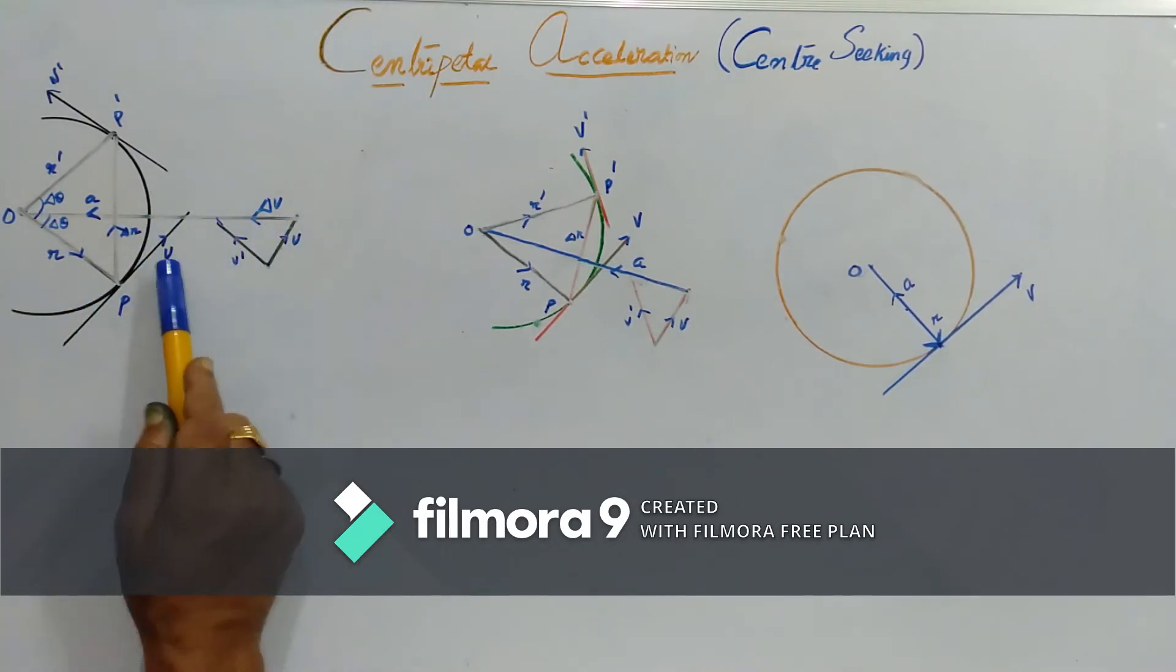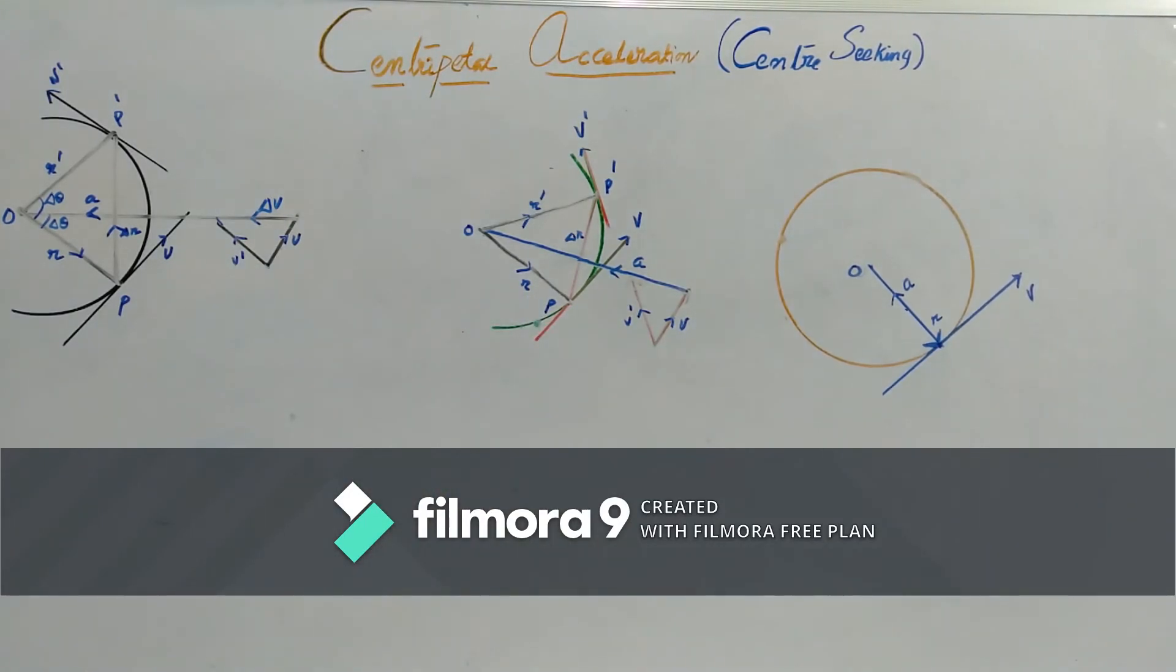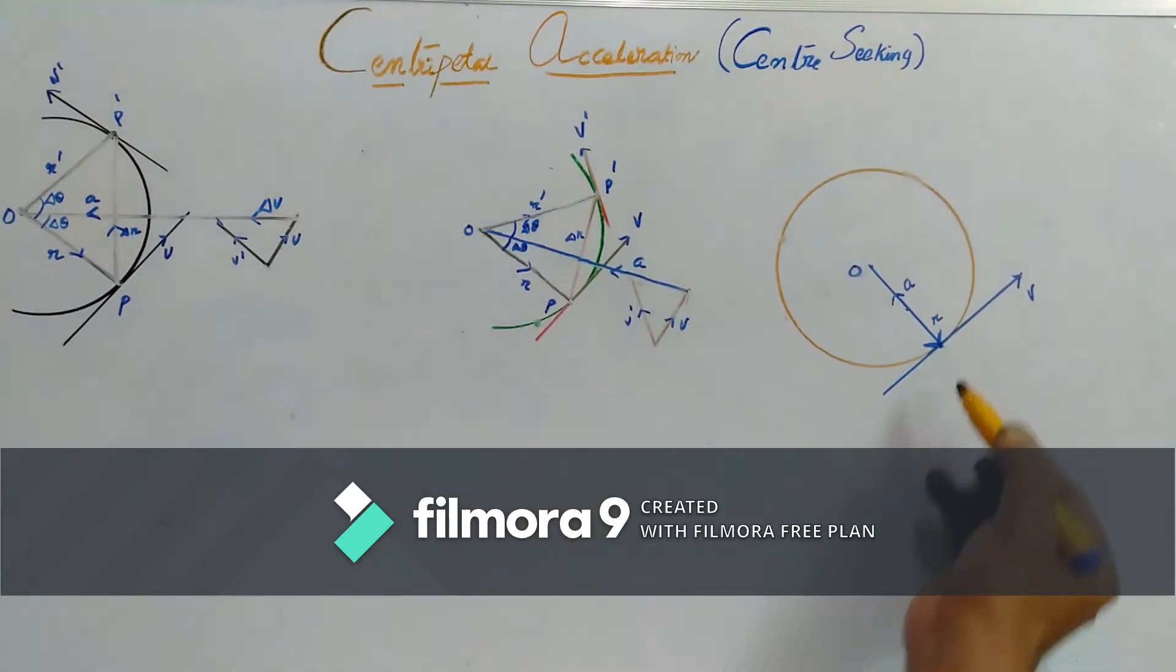Now, here we have done the same arrangement but only the thing is we have reduced the time interval. Delta T is gradually reduced. Now, here when delta T tends to 0 then P and P' will coincide with each other.